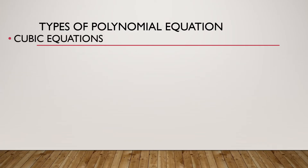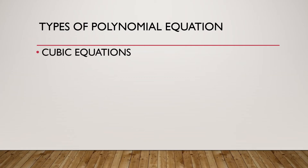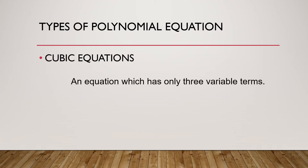The next one is called a cubic equation. It's an equation which has only three variable terms. For example, x cubed plus 2x squared plus x plus 4 equals 0.